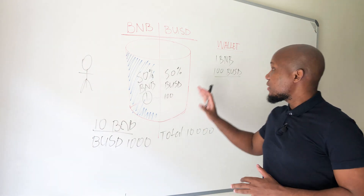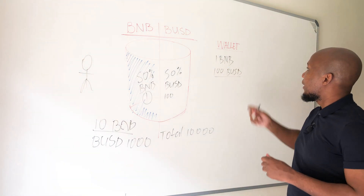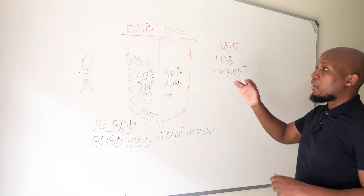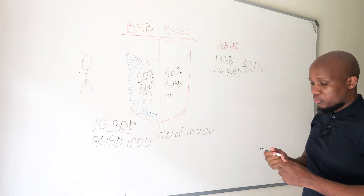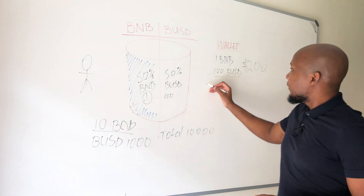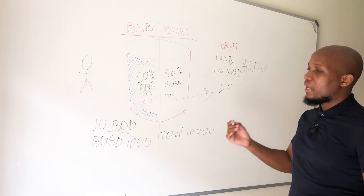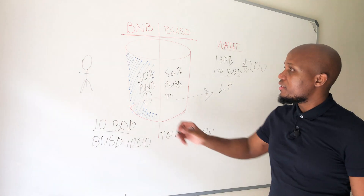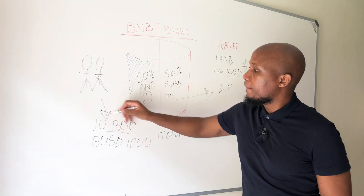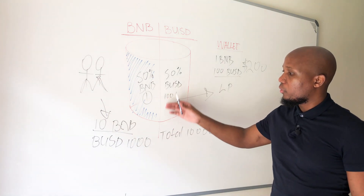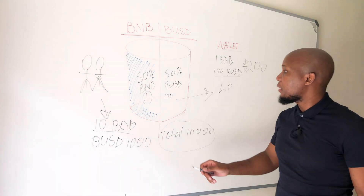So the total value is going to be $10,000. We've taken our funds and actually provided liquidity to the liquidity pool. The total value of our wallet is $200. Remember, when you actually provide liquidity, you'll be holding LP tokens — so now you are a liquidity provider, just like the other traders. The pool has 10 BNB total, 1000 BUSD, and a total value of $10,000.